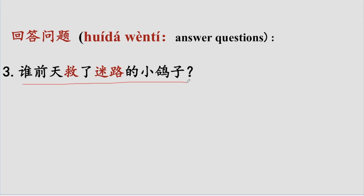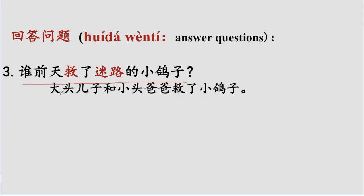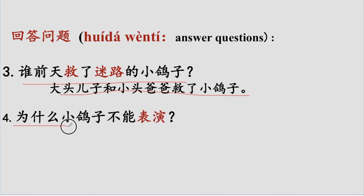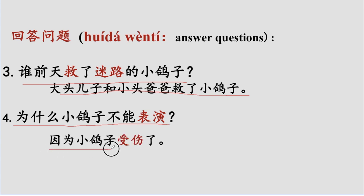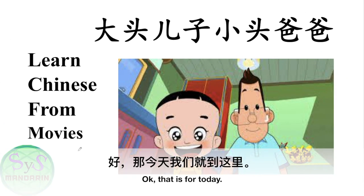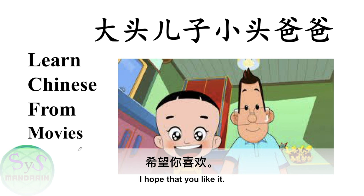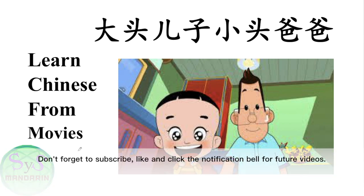谁前天救了迷路的小鸽子？对了，是大头儿子和小头爸爸救了小鸽子。好，第四个问题：为什么小鸽子不能表演？对了，因为小鸽子受伤了。好，那今天我们就到这里。That's for today. 希望你喜欢，I hope that you like it. Don't forget to subscribe, like and click the notification bell for future videos. 好，谢谢，那我们下次见。再见。Thank you, see you next time.